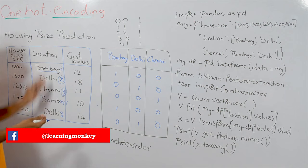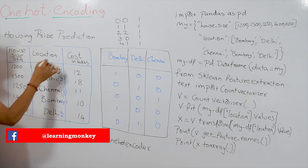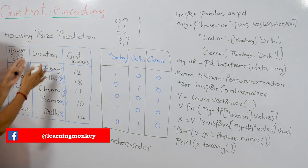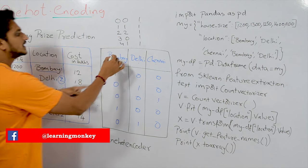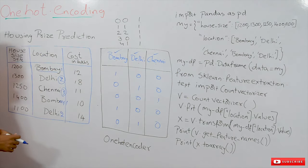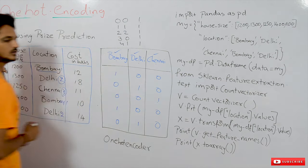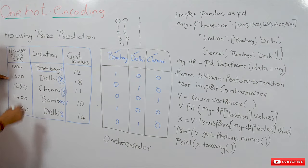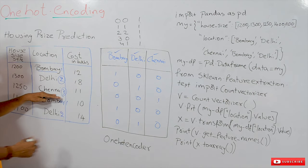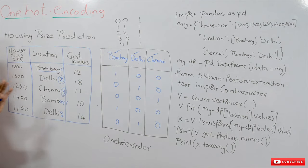So what we use instead is one-hot encoding. How many different categories do we have here? Three — Bombay, Delhi, and Chennai. One-hot encoding takes each category into a separate column. For Bombay, place 1 and remaining all 0s. At Delhi, place 1 and remaining all 0s. At Chennai, place 1 at the Chennai column and 0s elsewhere. This is what one-hot encoding is.